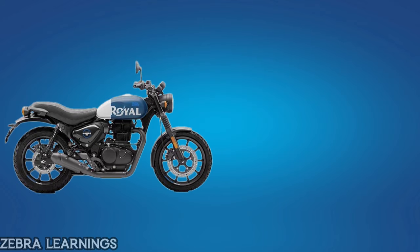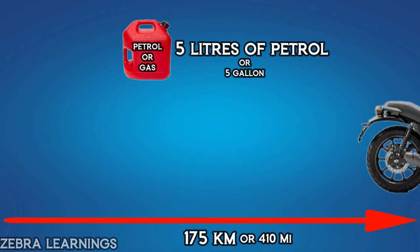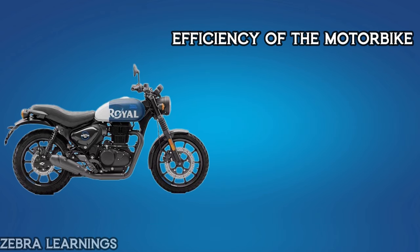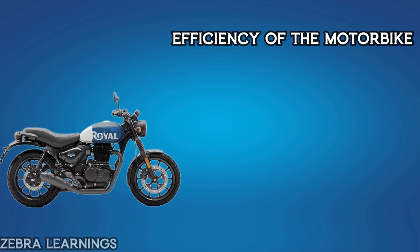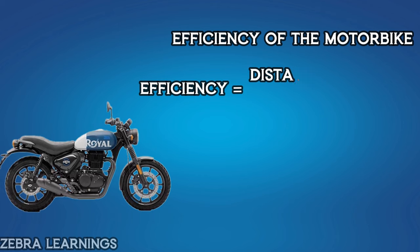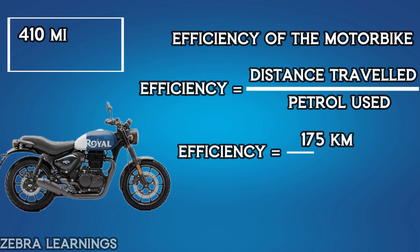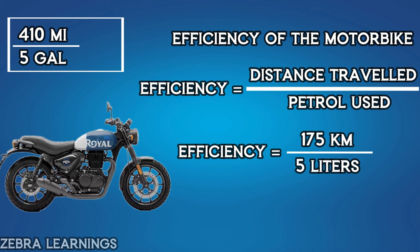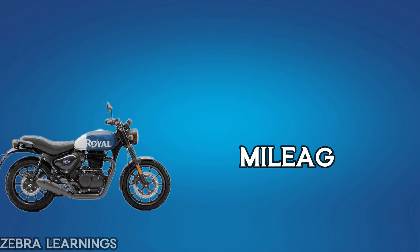Let's take a motorbike. We travel 175 kilometers using 5 liters of petrol. How much is the efficiency of this motorbike? There is a simple formula: efficiency equals distance traveled divided by petrol used. Efficiency equals 175 kilometers divided by 5 liters of petrol, which equals 35. This means that this motorbike can travel up to 35 kilometers on 1 liter of petrol. This is what we call mileage.